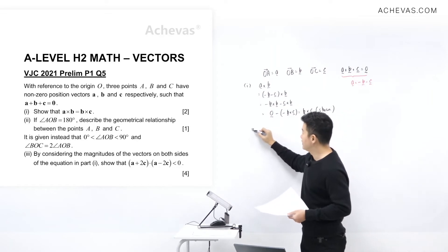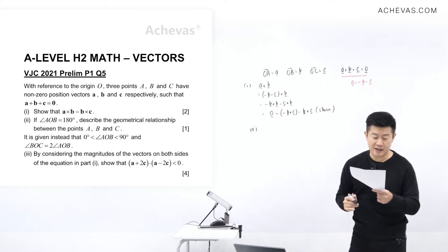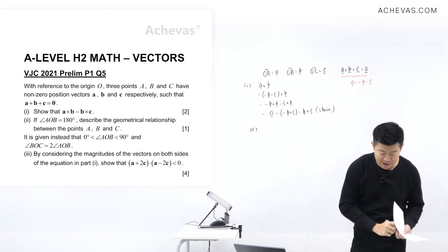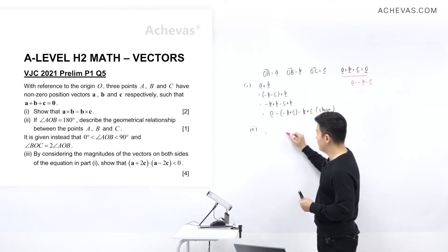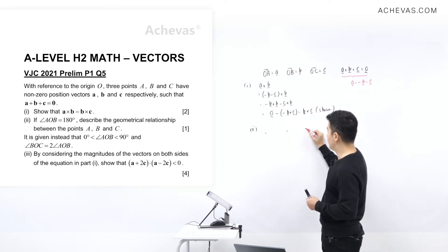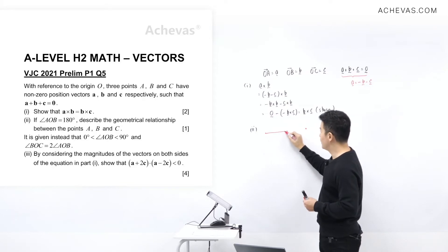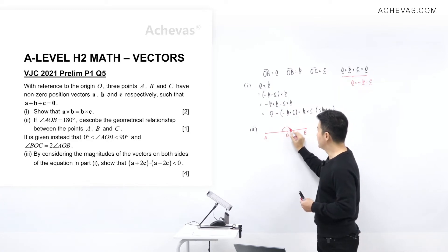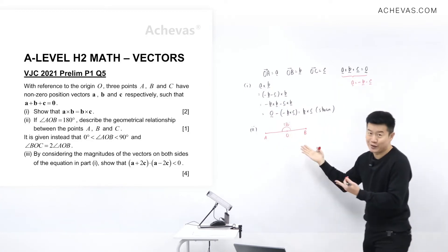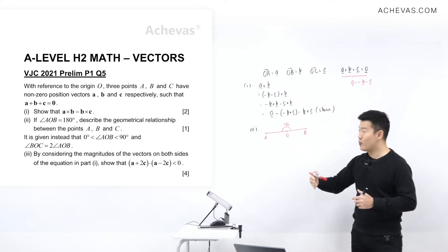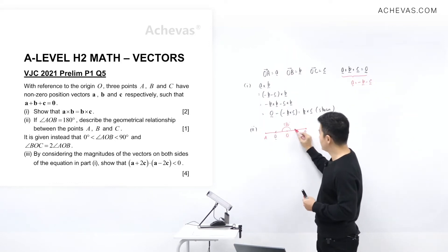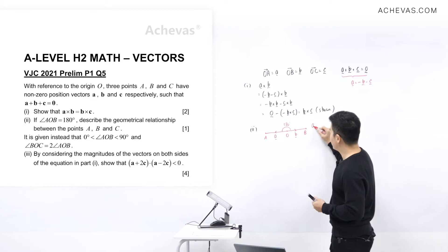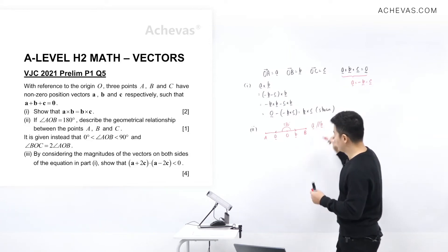In Part 2, we are given that angle AOB is 180 degrees. Let's have a quick visual of what is happening. Here is point A, here is point O, and here is point B. According to the question, angle AOB is 180 degrees, so you can see that A, O, B are lying on the same straight line. This tells me that vector a is going to be parallel to vector b.